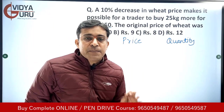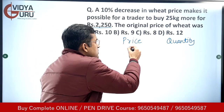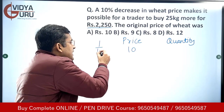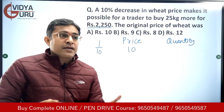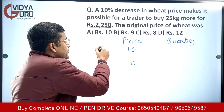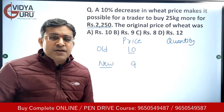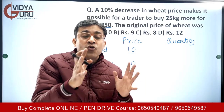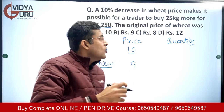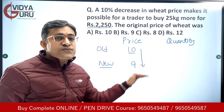There is a 10 percent decrease. In fractional terms, 10 percent is 1 by 10 — that means on a base of 10 there is a decrease of 1. So if the price was 10 units earlier, now the price has become 9 units. The old price was 10 rupees and the new price is 9 rupees. Price and quantity have an inverse relationship.